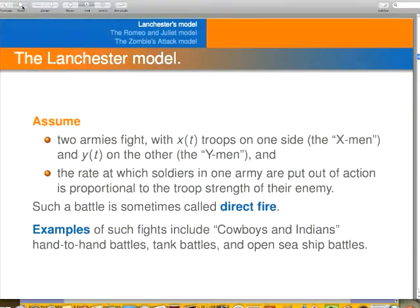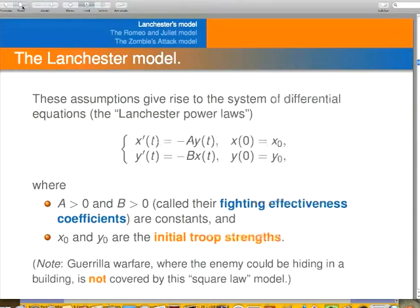So our assumptions are we have two armies. Let's call them the X-Men and the Y-Men. X of T is the number of troops on the X-Men side and Y of T is the number of troops on the Y-Men side. The rate at which the soldiers in one army are put out of action is proportional to the troop strength of the enemy. Tank battles, ship battles are examples. These differential equations are called Lancaster's equations. X-Prime is minus A-Y, Y-Prime is minus B-X. This is the Lancaster model here. Sometimes A and B are called the fighting effectiveness coefficients, and X-NOT and Y-NOT are the initial troop strengths.